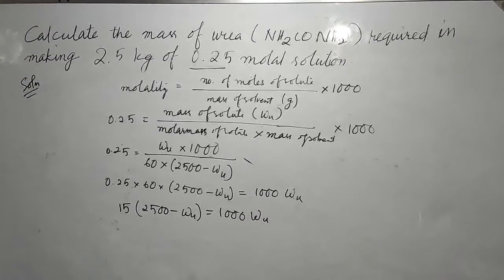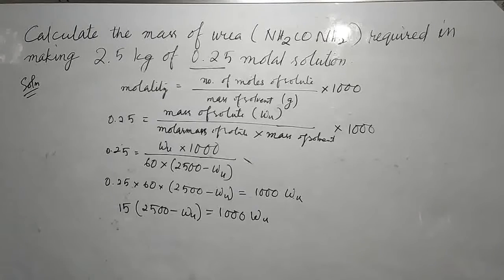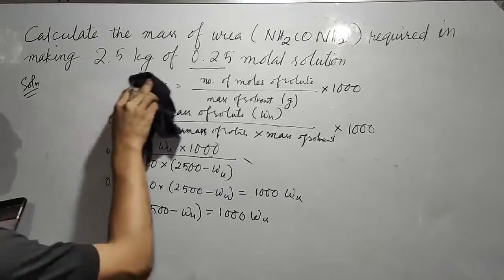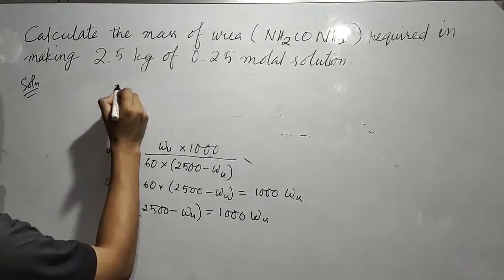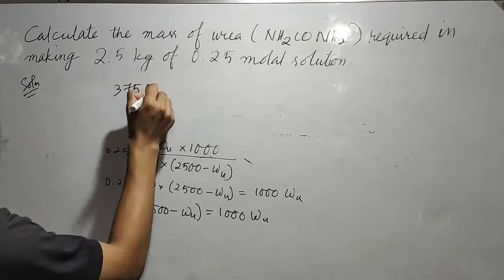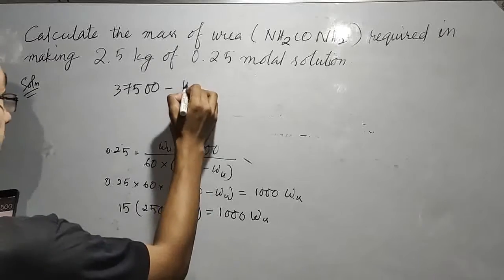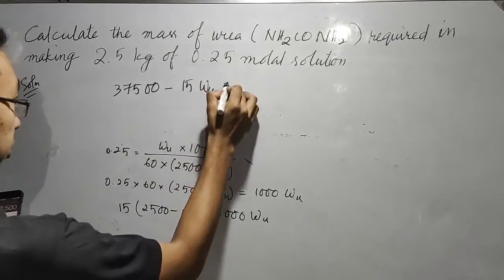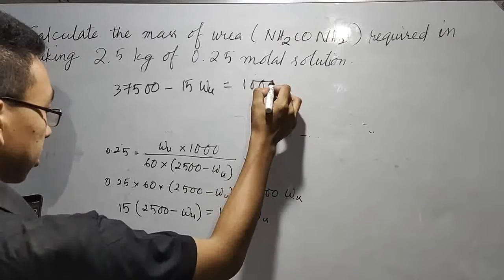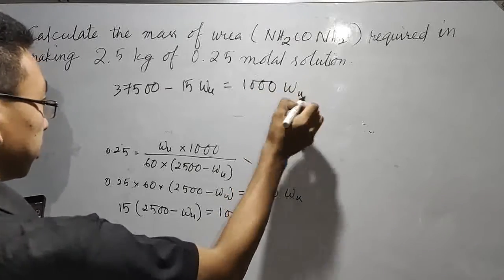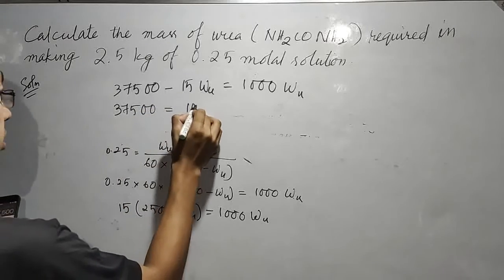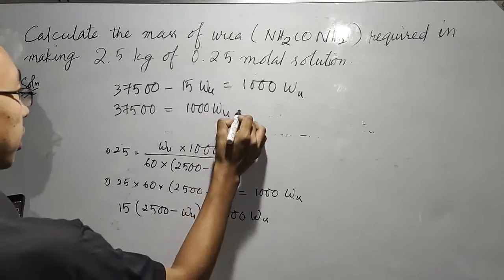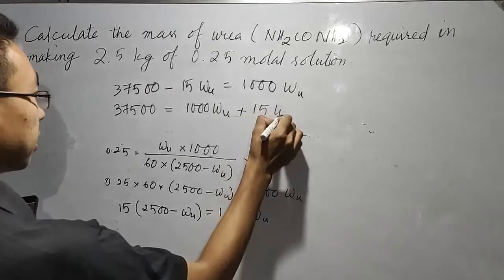15 multiplied by 2,500 we get 37,500. So 37,500 minus 15 W_u equals 1000 W_u. Therefore, 37,500 equals 1000 W_u plus 15 W_u.